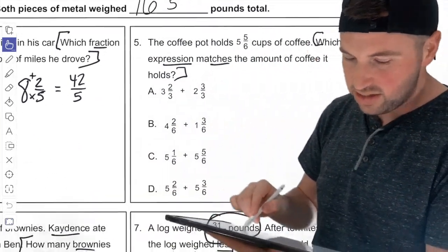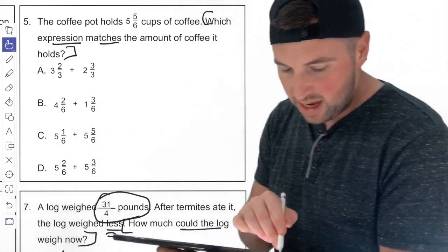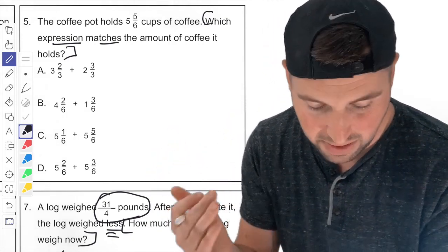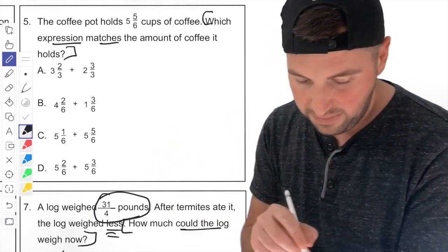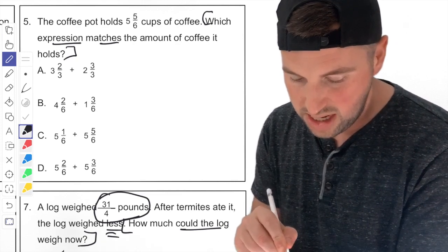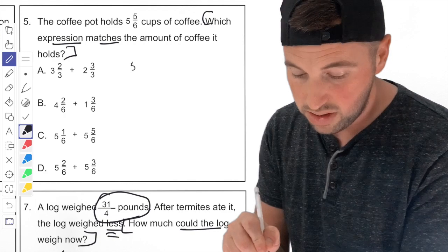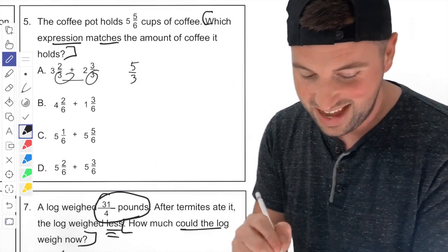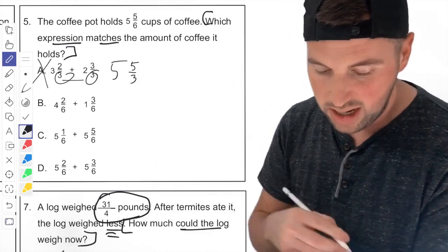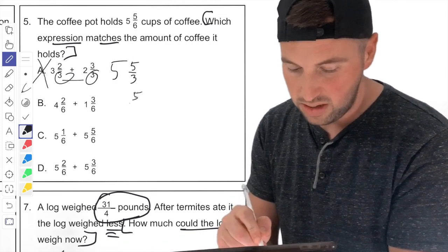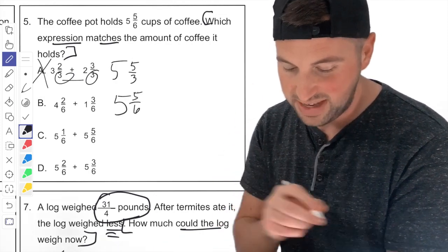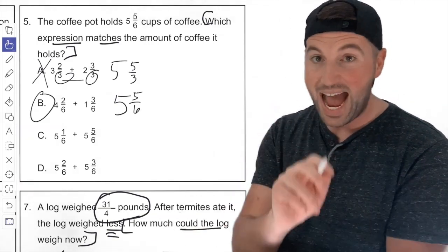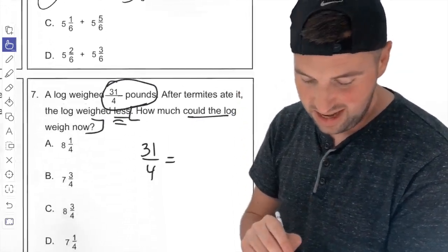Looking at number four — we already answered that one: 42 fifths. Number five: which expression matches 5 and 5 sixths? Checking option A — 2 thirds plus 3 thirds would be 5 thirds, not 5 sixths. They're trying to trick you by making you add the denominators. That does not work. Checking the next option: 3 plus 2 is 5 sixths for the fraction, and 4 plus 1 is 5 for the whole number. That's our answer. We don't add or subtract denominators — don't get tricked.